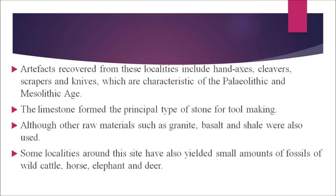Some localities around this site have also yielded small amounts of fossils of wild cattle, hares, elephants, and deer. The Deccan, which is drier than the coastal region of India, produced some of the major dynasties in Indian history, including the Pallavas, Satavahanas, Vakatakas, Chalukyas, and Rashtrakutas.